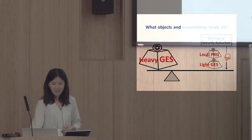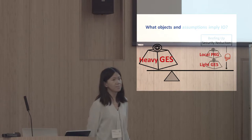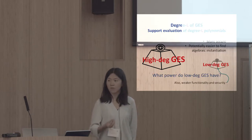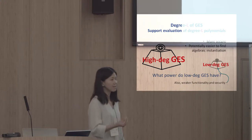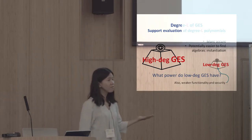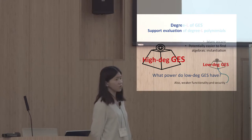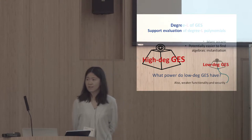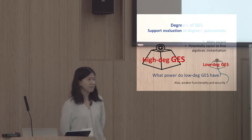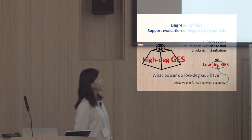What exactly is different between heavy versus light? One significant metric is the degree of the graded encoding. We say a graded encoding has degree L if it supports evaluation of degree L polynomials over encoded ring elements and allows you to test whether the output is zero or not. Heavy versus light means high degree versus low degree. Low degree is simpler, provides weaker functionality, and with respect to noise-based instantiations, tends to be more secure because you can use smaller noise.